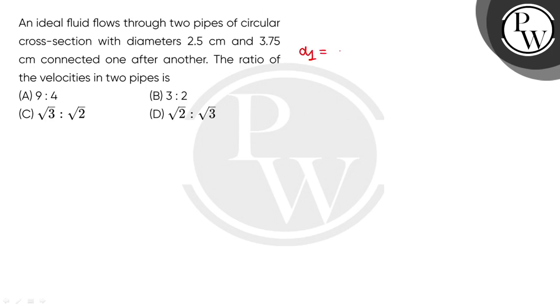First, the diameter of the pipe is 2.5 cm, which is 2.5 × 10⁻² meter. The second pipe diameter is 3.75 cm, which is 3.75 × 10⁻² meter.